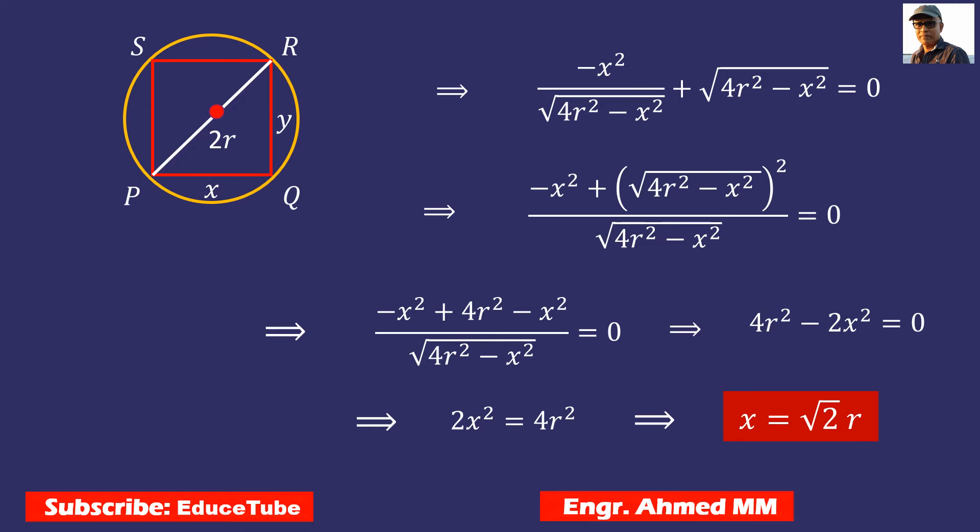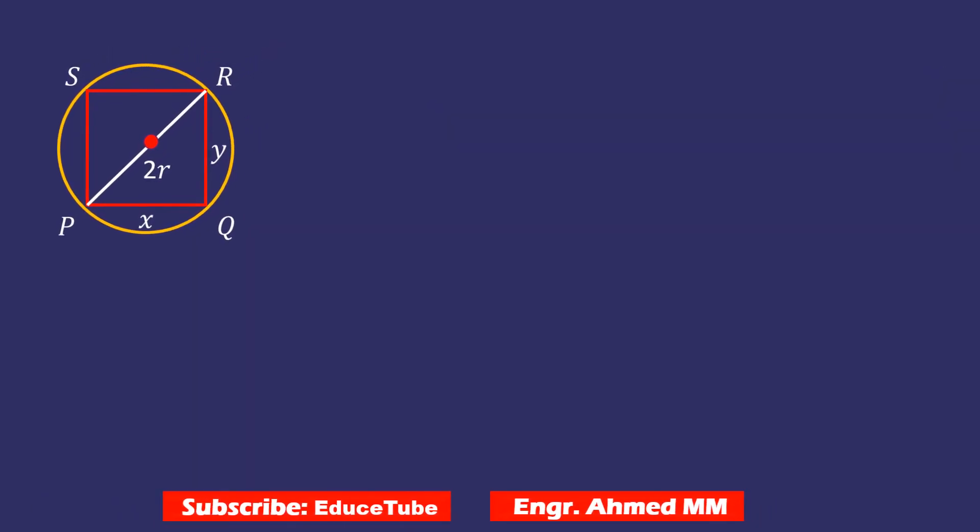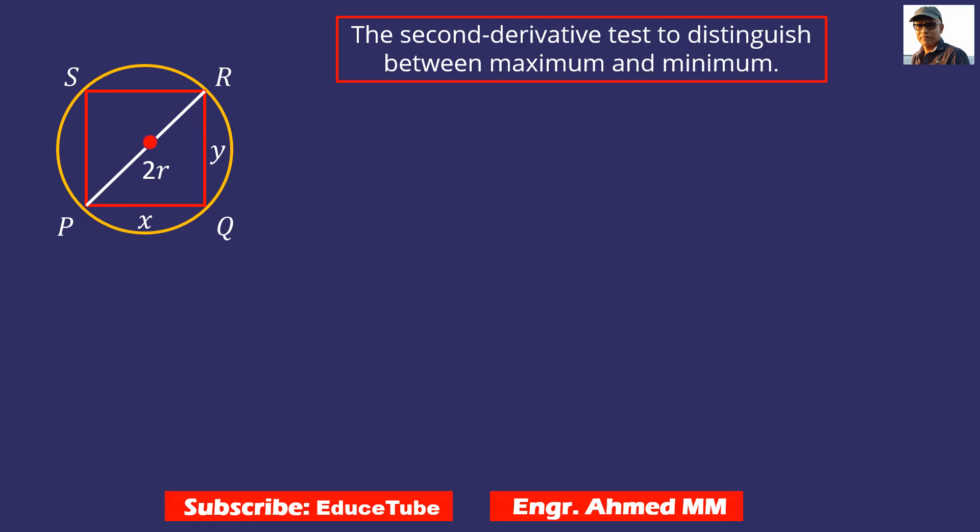Now let's do the second derivative. The reason is second derivative test gives distinction between maximum and minimum. We had taken first derivative equal to zero. Now we have to show that second derivative is less than zero, then we will be 100% sure area will be maximum.